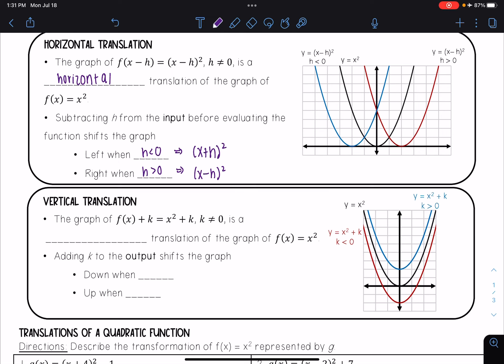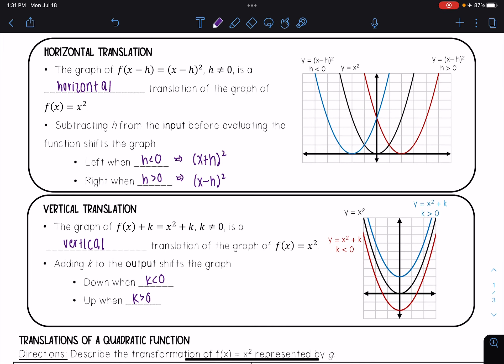Then we have vertical translations. The graph of f(x) + k, which equals x² + k, where k ≠ 0, is a vertical translation of the graph of f(x) = x². Adding k to the output shifts the graph down when k < 0 and up when k > 0. You can see in the graphs what those translations look like.